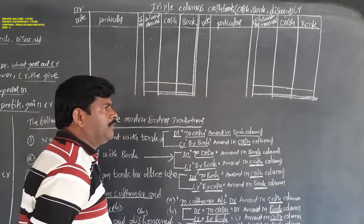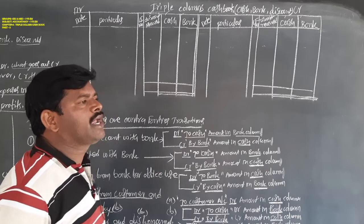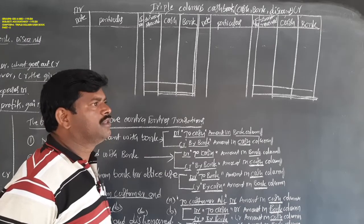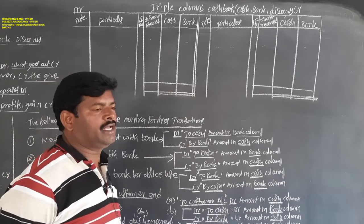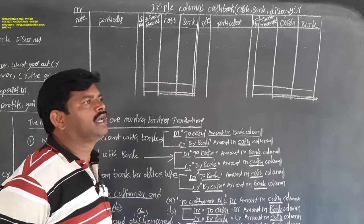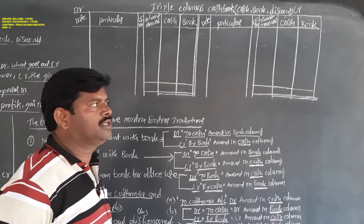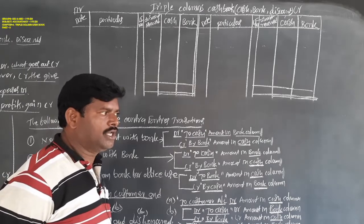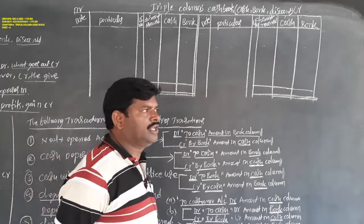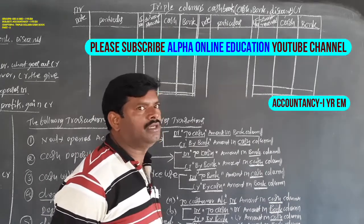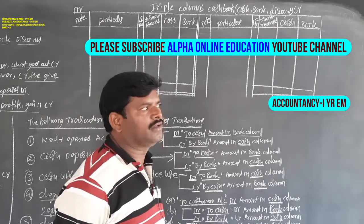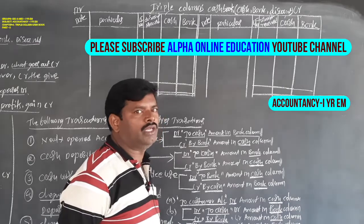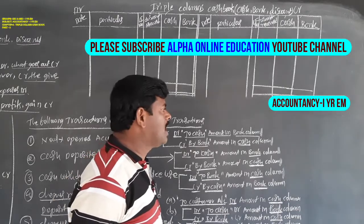In the triple column cash book, only cash transactions are recorded — either cash or through cheque. There is no record for credit transactions, credit purchases, credit sales, assets or goods on credit. There is no record for outstanding expenses, prepaid expenses, or accrued incomes. Only when cash is received or cheques are received must those transactions be recorded in the triple column cash book.